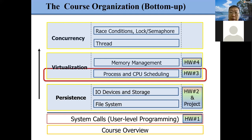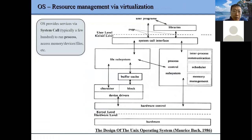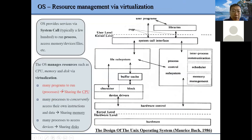We have two parts: process and CPU scheduling, and memory management. Homework 3 will be related to CPU scheduling. We have one paper-based homework and also a programming-based homework — that one is a bonus for five points.